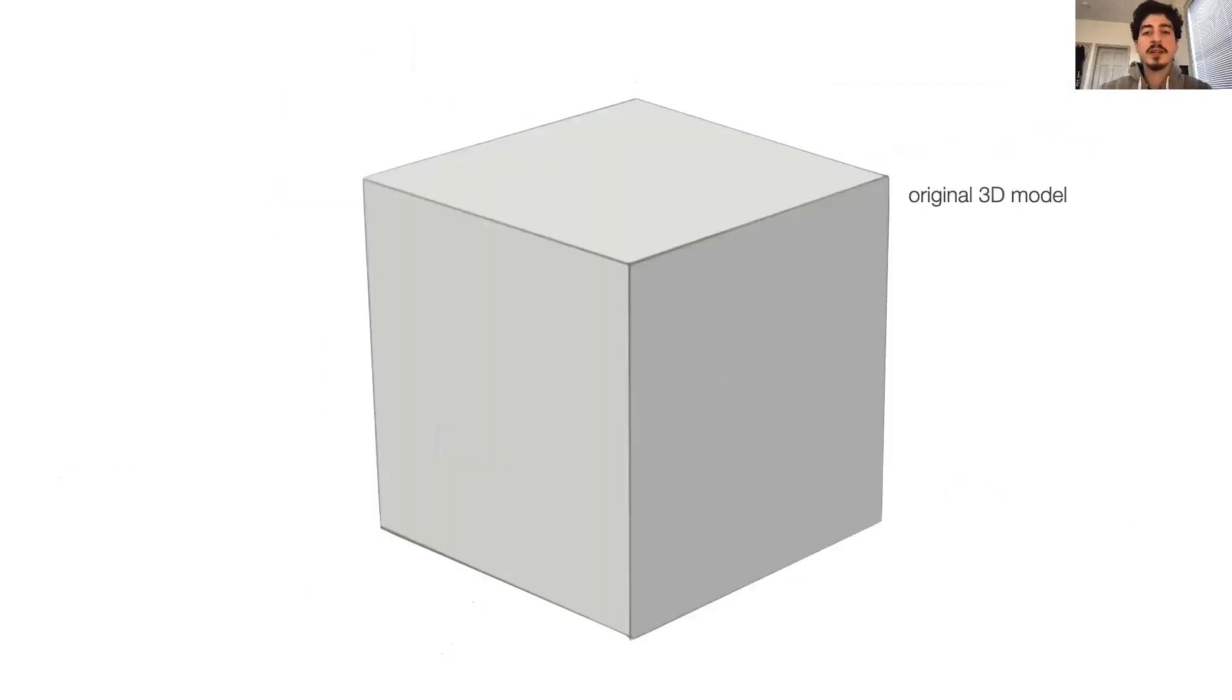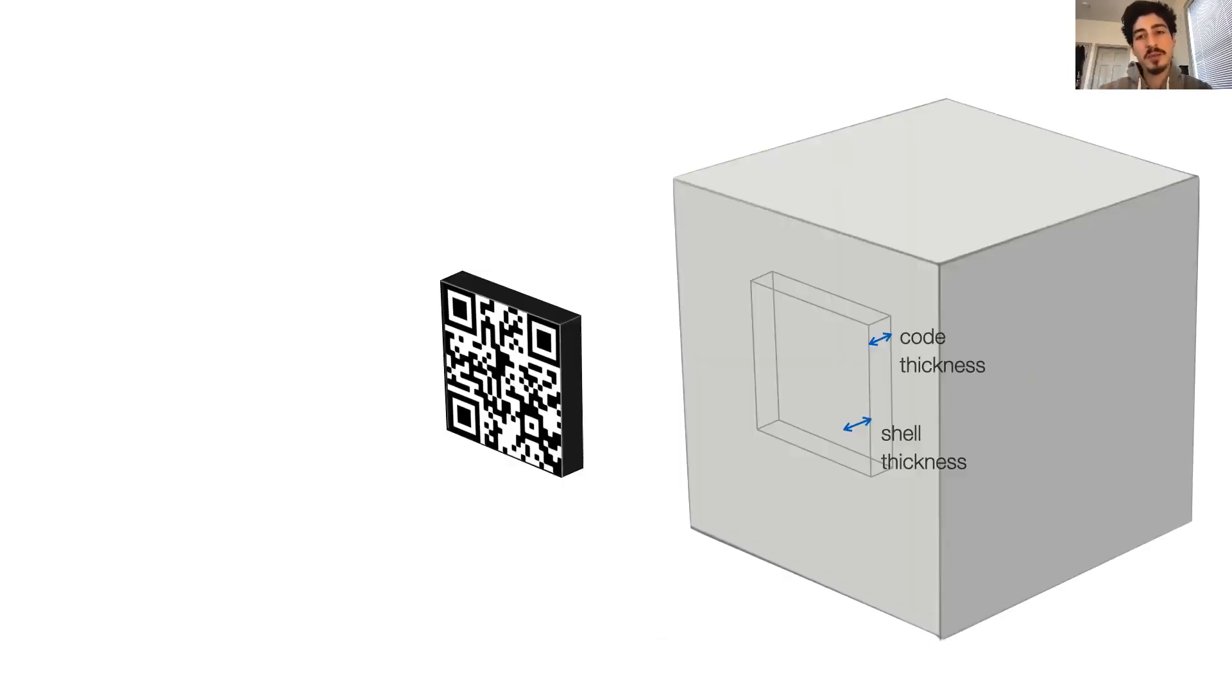Now that we know the material's characteristics, let me explain how the tag is embedded. Let's assume that this box is the original 3D model that we want to embed the tag in. First, we pick where the tag should be facing and then we go down the surface by a certain distance, the shell thickness. Underneath, we have the tag with the thickness value labeled as code thickness. The tag, which is a QR code in this example, is extruded as a cuboid. Now let me move the cuboid out of the object. You see how the main object on the right has a void where the tag can go in. These two parts are integrated and printed together.